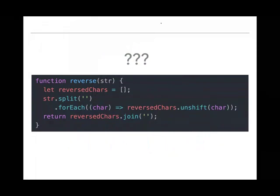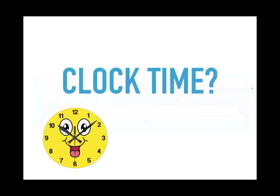So if I ask you how good your algorithm is, your first instinct might be to look at this reverse function. By looking at it you can understand what it's doing: there's an array of reverse characters, it splits the string, then for each character in the split string it unshifts it onto the beginning of an array, joins that array together, and you have a reversed string. The question is: how good is this algorithm? How do we describe its speed or efficiency?